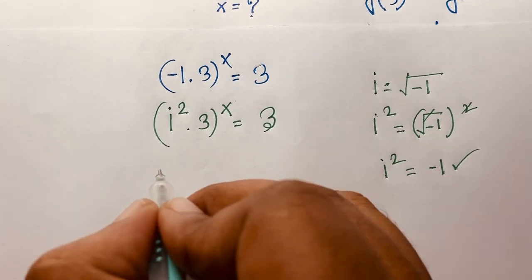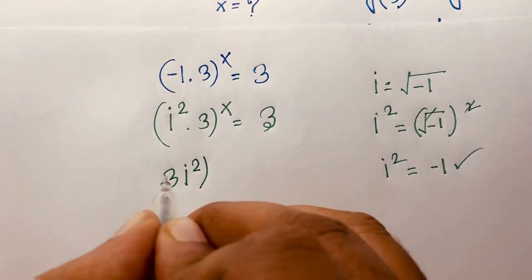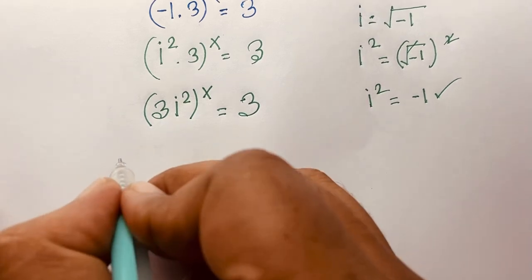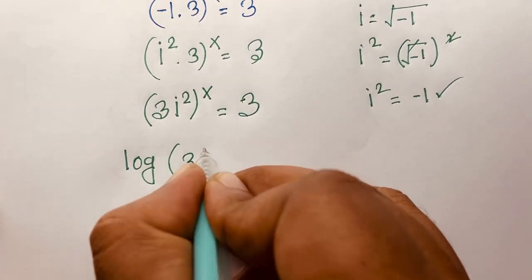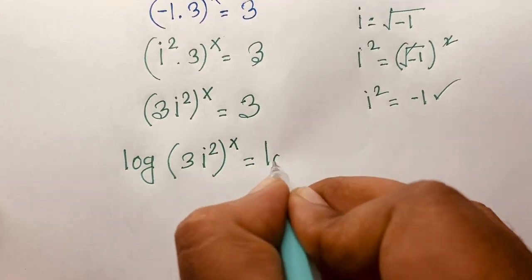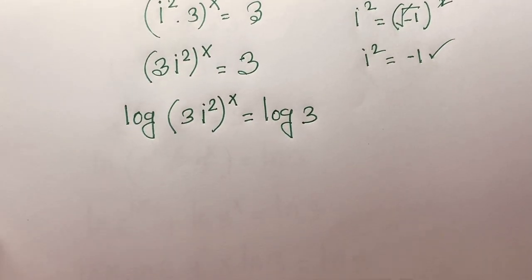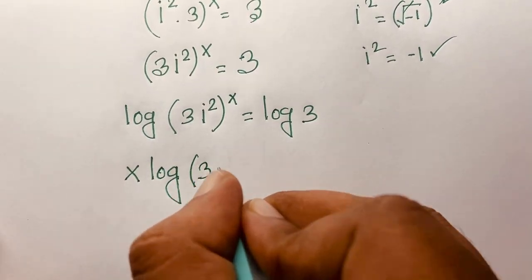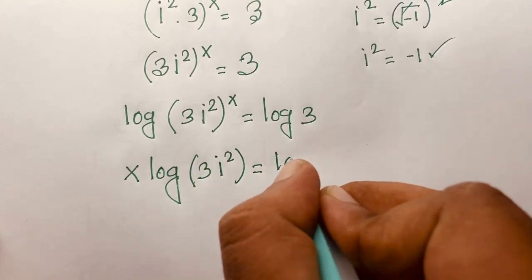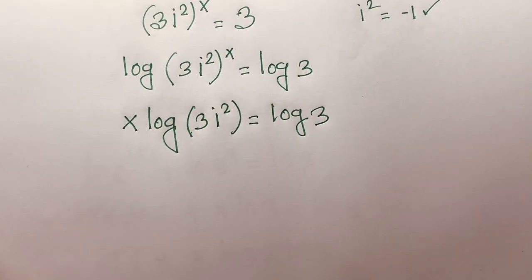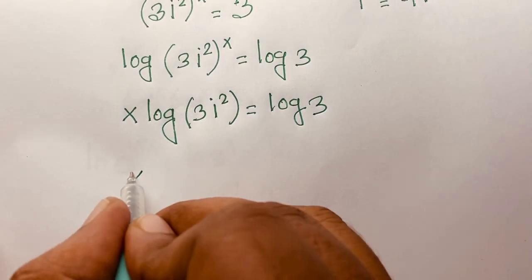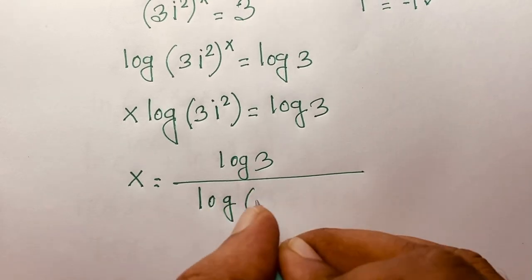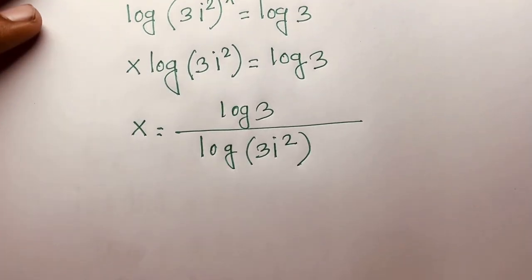You can see easily that (3i²) to the power of x is equal to 3. Applying log to both sides: log of (3i²) to the power of x is equal to log 3. Moving x to the front: x · log(3i²) is equal to log 3. Dividing both sides by log(3i²), we find x is equal to log 3 over log(3i²). This is our final answer.